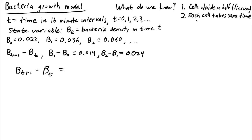It grows by cells divided in half through fission. And we'll assume each cell takes the same amount of time to divide in half. The data that we have gives us the bacteria population every 16 minutes. If it turned out that each cell took 16 minutes to divide, then we would expect that at every time step the population would double.